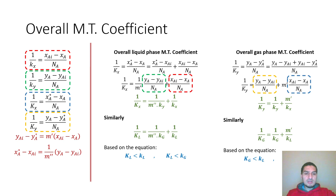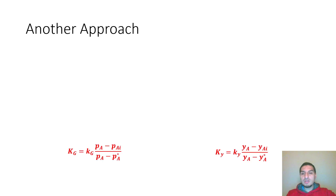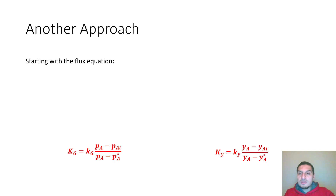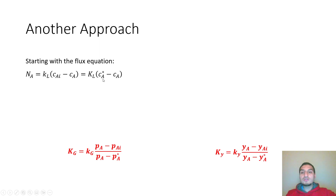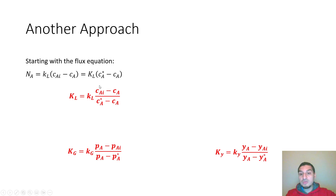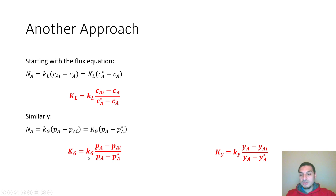There is a simpler alternative. You can start directly with the flux equation: N_A = k_L(c_interface − c_a) = K_L(c* − c_a). Rearranging, K_L = k_L · (c_interface − c_a) / (c* − c_a). All this information is already available from the graph — you know the interfacial concentration, the bulk concentration, and c*. Similarly for the gas phase: K_G = k_G · (p_a − p_interface) / (p_a − p*).